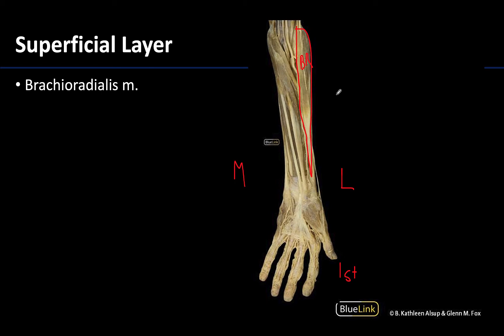The brachioradialis flexes the elbow joint, which is unique because most muscles in the posterior compartment extend. What this muscle does share in common with the other muscles of the posterior compartment is its innervation — the radial nerve. That is likely why the brachioradialis is considered with the posterior compartment muscles, but it is much easier to identify in this anterior view.